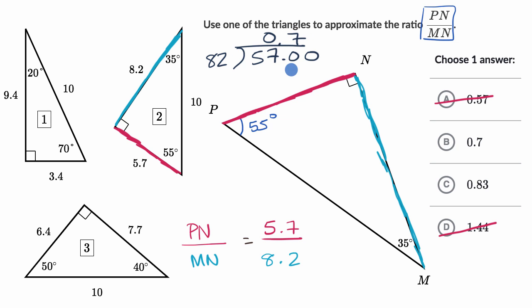So seven times two is 14, and then seven times eight is 56, I guess it's 57. So it's actually a little less than 0.7. This made me go a little bit too high. So if I am approximating, it's going to be 0.6 something. So I like choice B right over there.